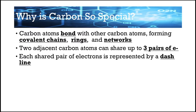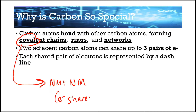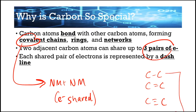Carbon atoms bond with other carbon atoms and form covalent chains, rings, and networks. A covalent bond is when electrons are shared. Two adjacent carbon atoms can share up to three pairs of electrons. Carbon atoms can have single, double, and triple bonds — quadruple bonds do not exist. Each bond is represented by a dash line.